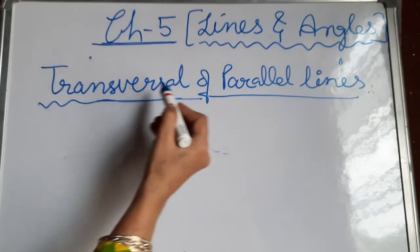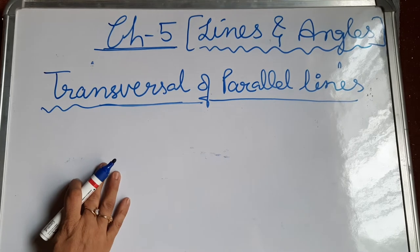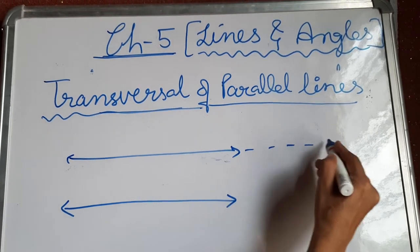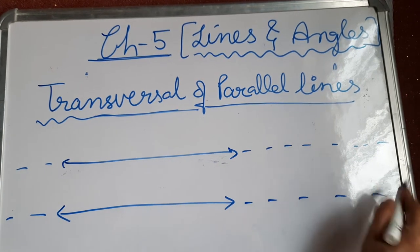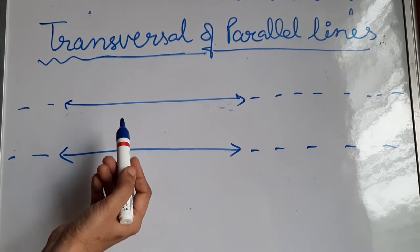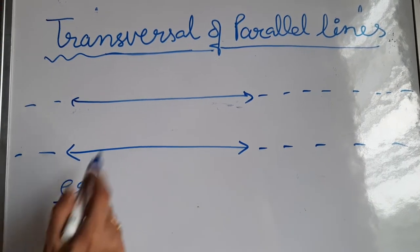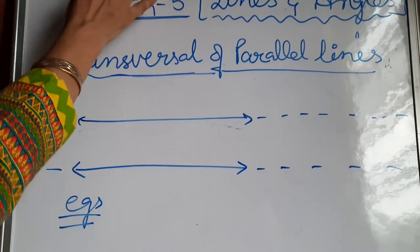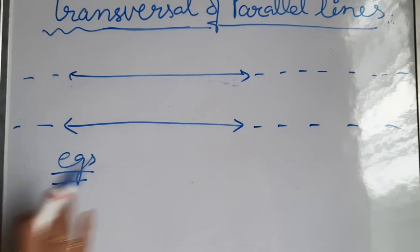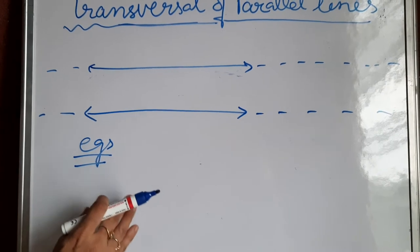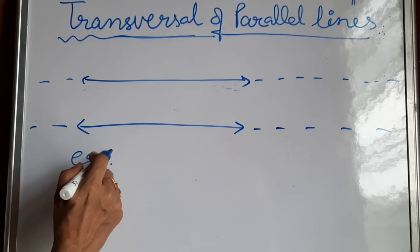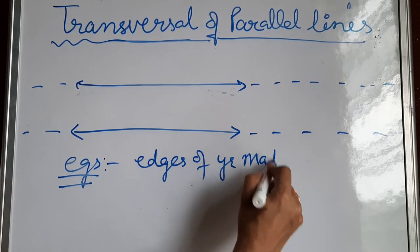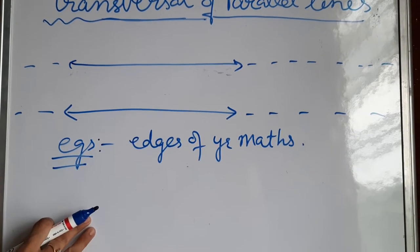Now come to the next topic: transversal of parallel lines. Do you remember what parallel lines are? They are lines on a plane that do not meet anywhere. If we extend them on both sides, they never meet. You have studied this earlier. See examples from daily life — the two edges of a blackboard never meet, so that is an example of parallel lines. Other examples include edges of your book, math copy, register, or scale.